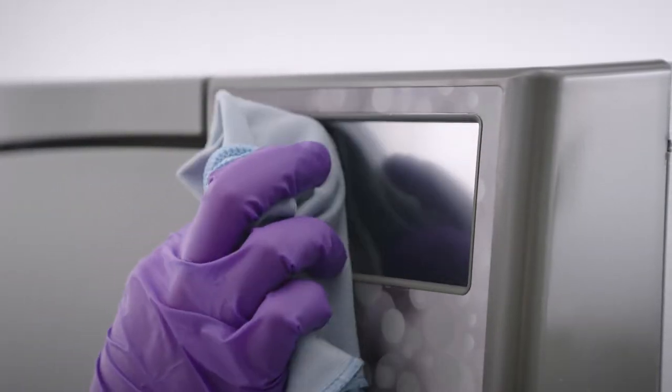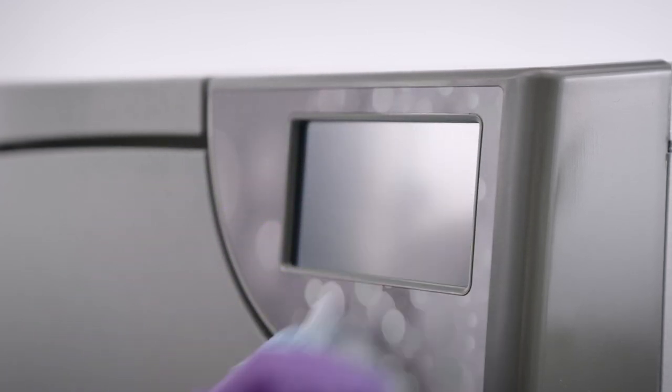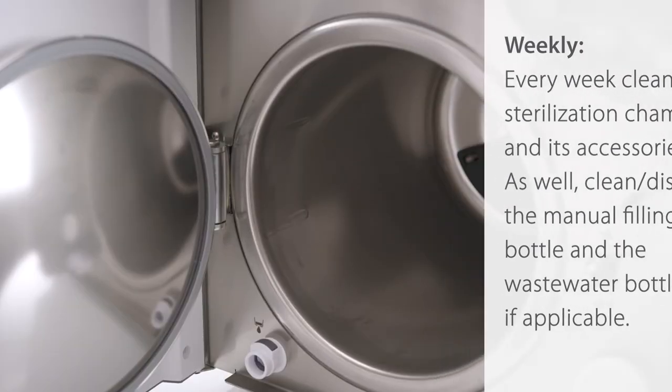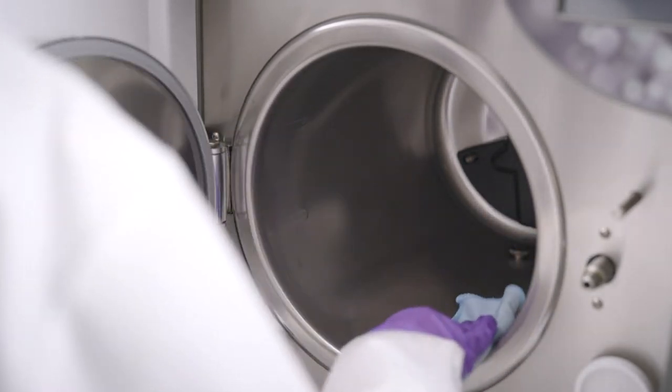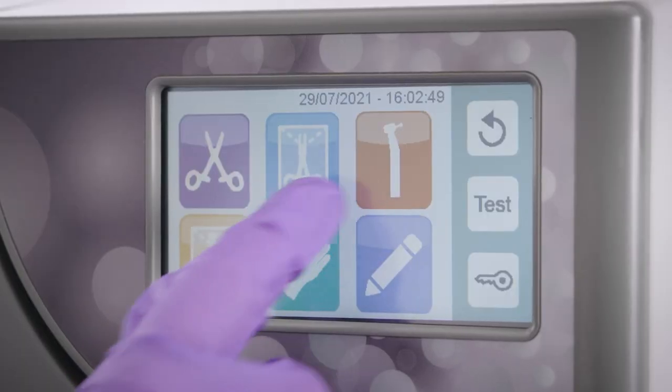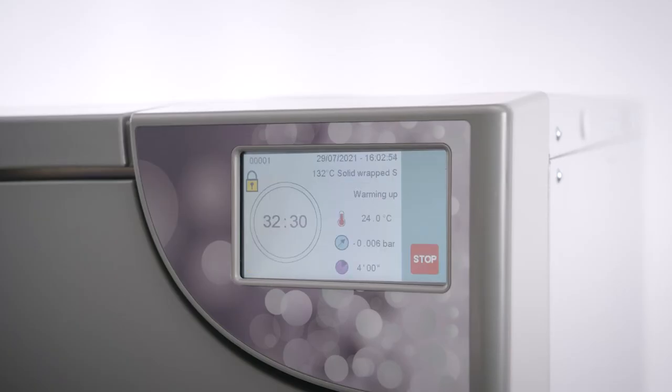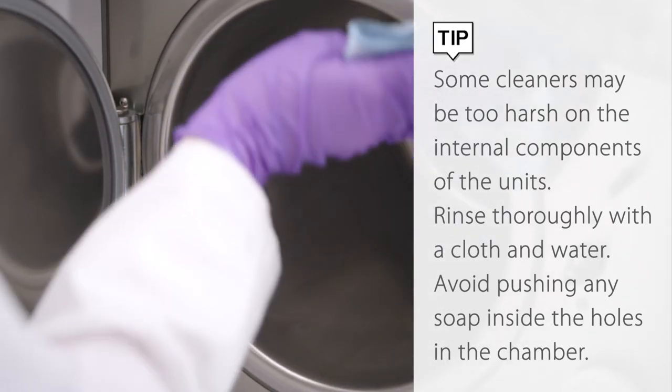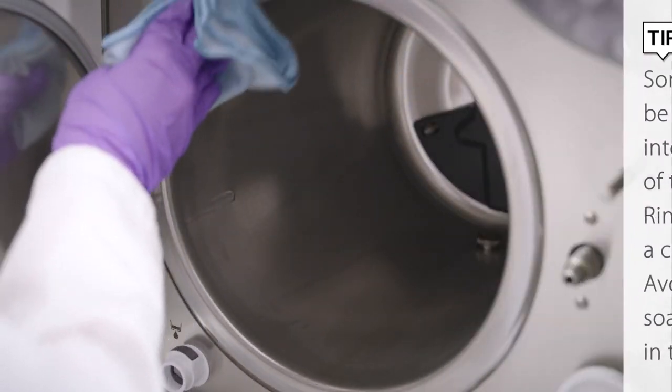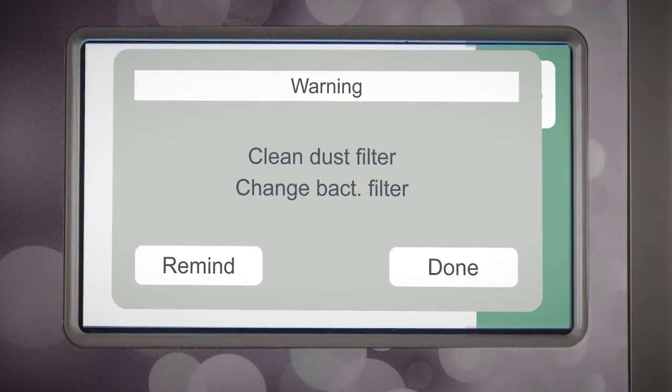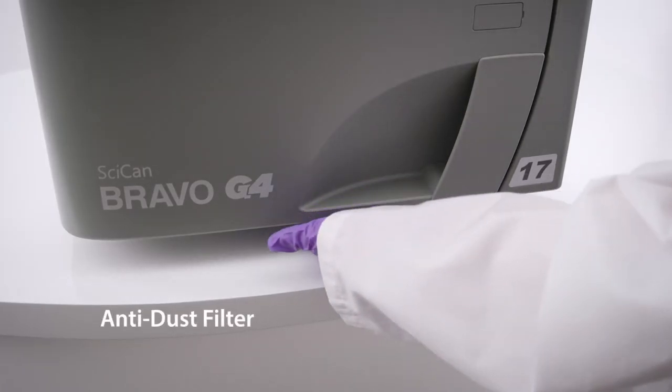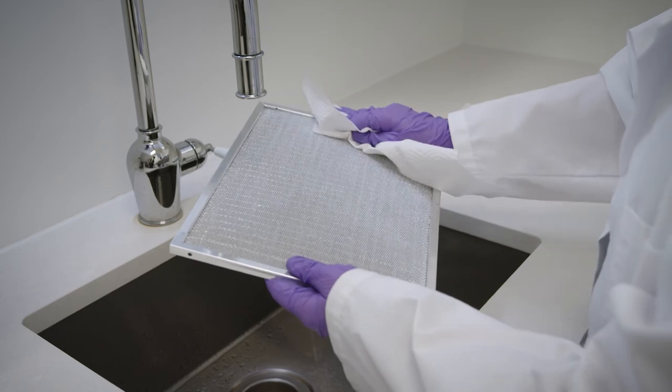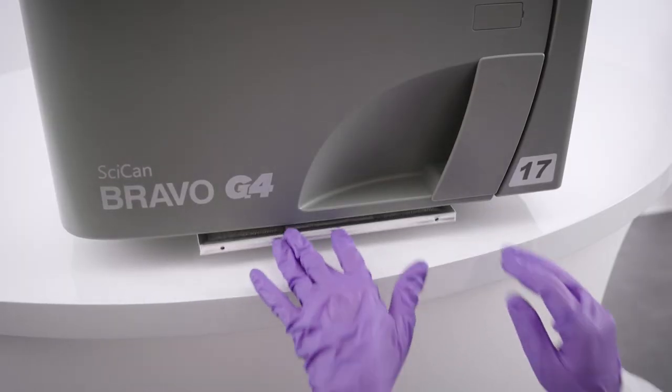Weekly, every week clean the sterilization chamber and its accessories as well. Clean and disinfect the manual filling bottle and the wastewater bottle if applicable. Run one empty cycle after using any cleaner or soap. Helpful tip: some cleaners may be too harsh on the internal components of the units. Rinse thoroughly with a cloth and water. Avoid pushing any soap inside the holes in the chamber. The anti-dust filter should be cleaned weekly as well. To clean the anti-dust filter, remove the filter from the lower part of the autoclave, thoroughly rinse with water and dry it before refitting. The filter can also be cleaned using a jet of compressed air, making sure not to disperse any dust into the environment.